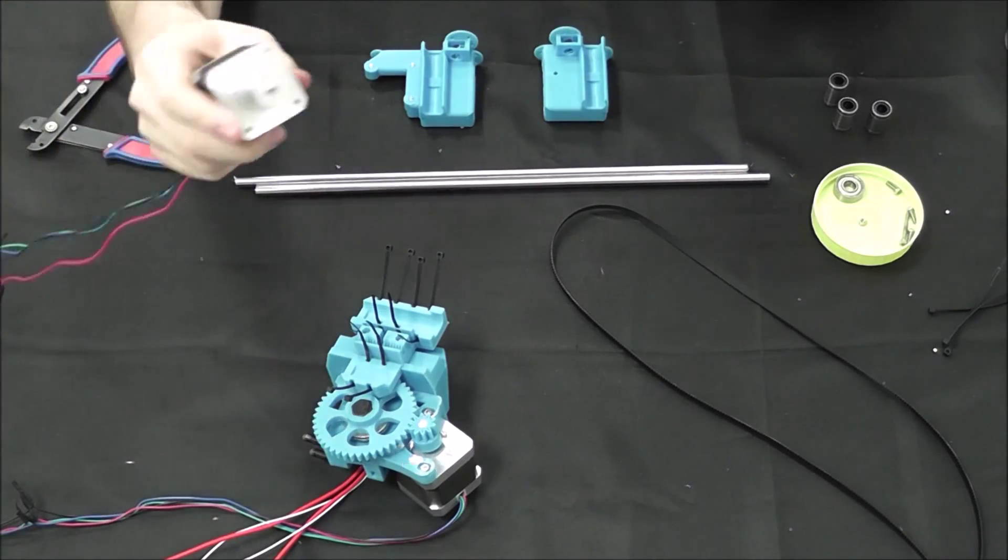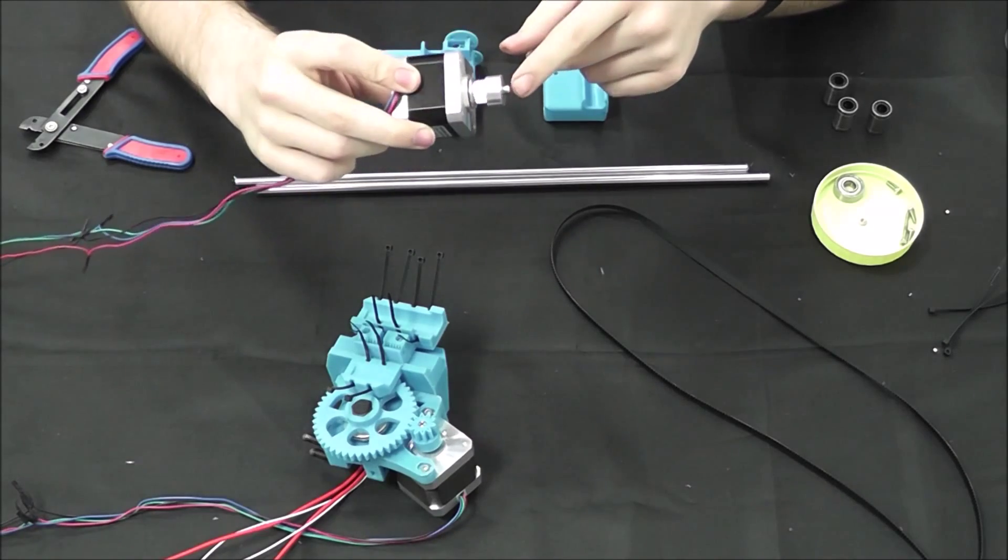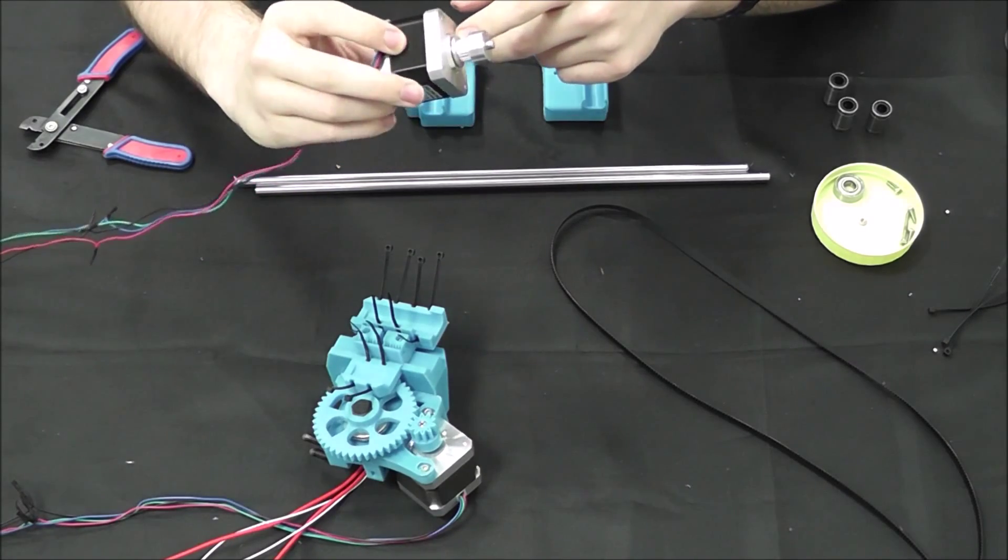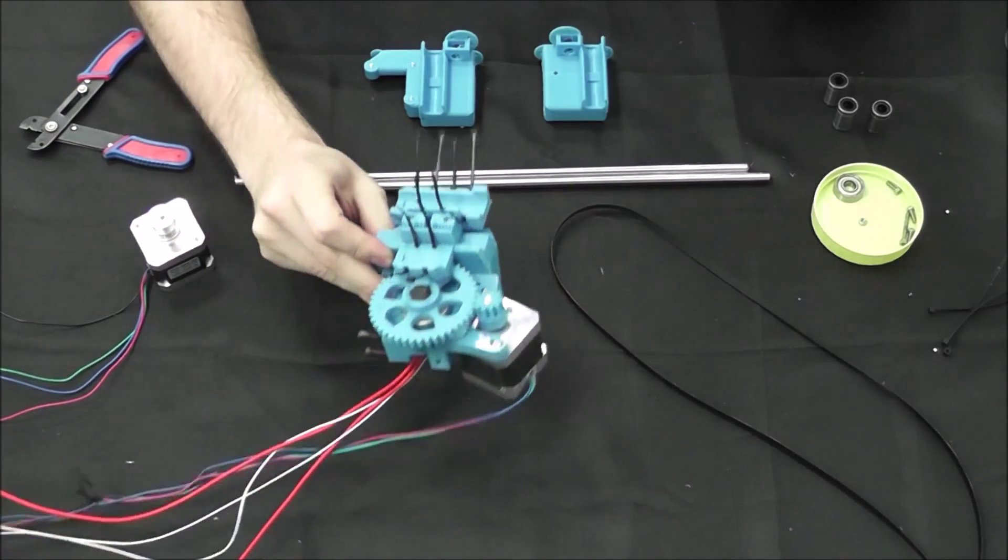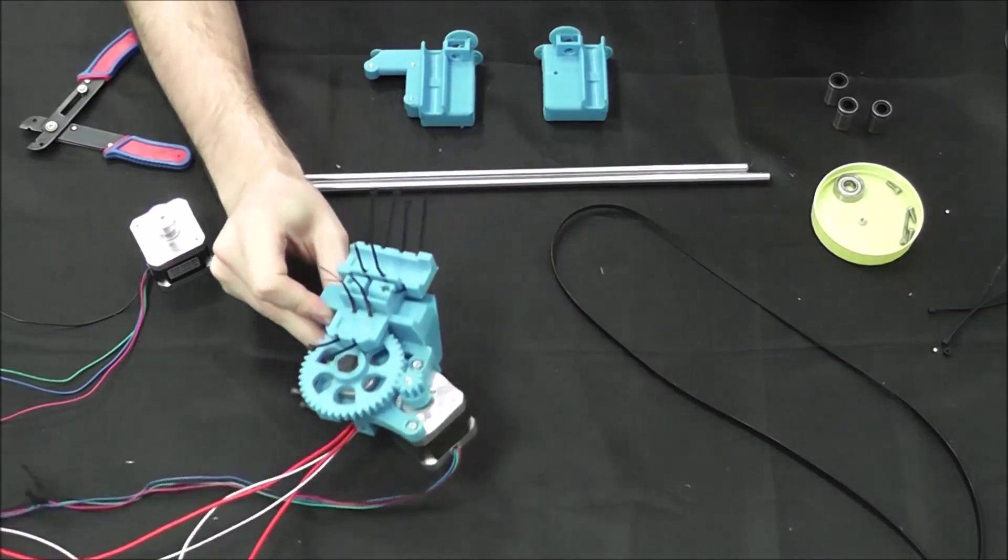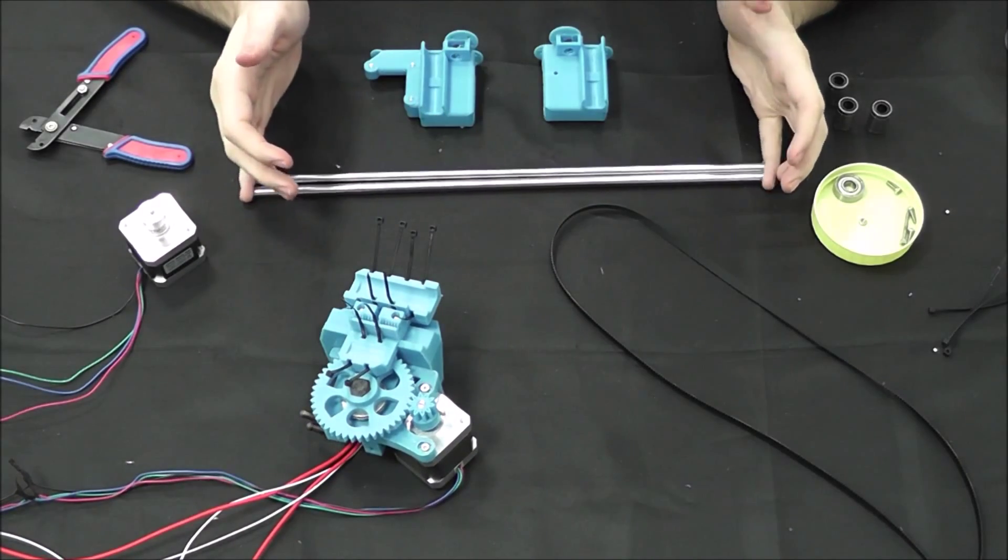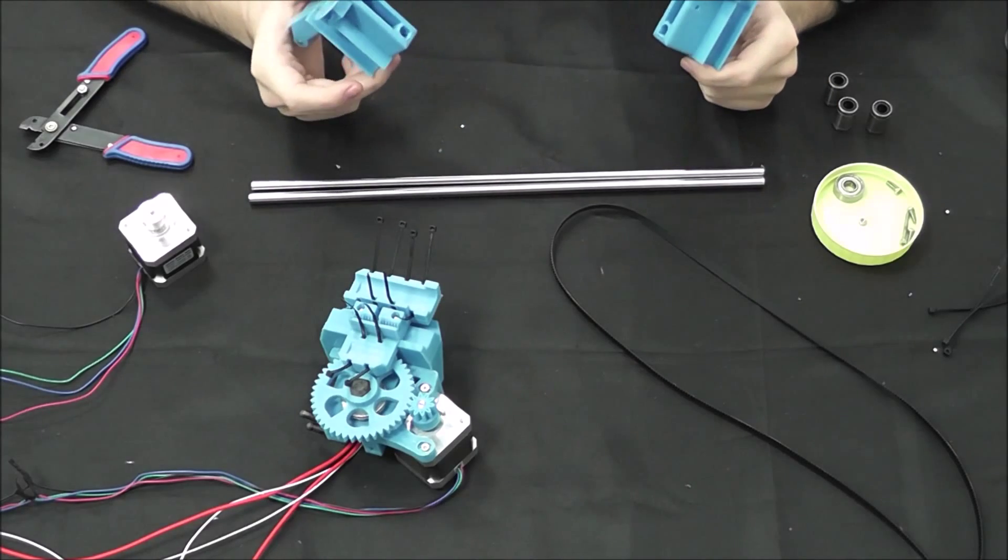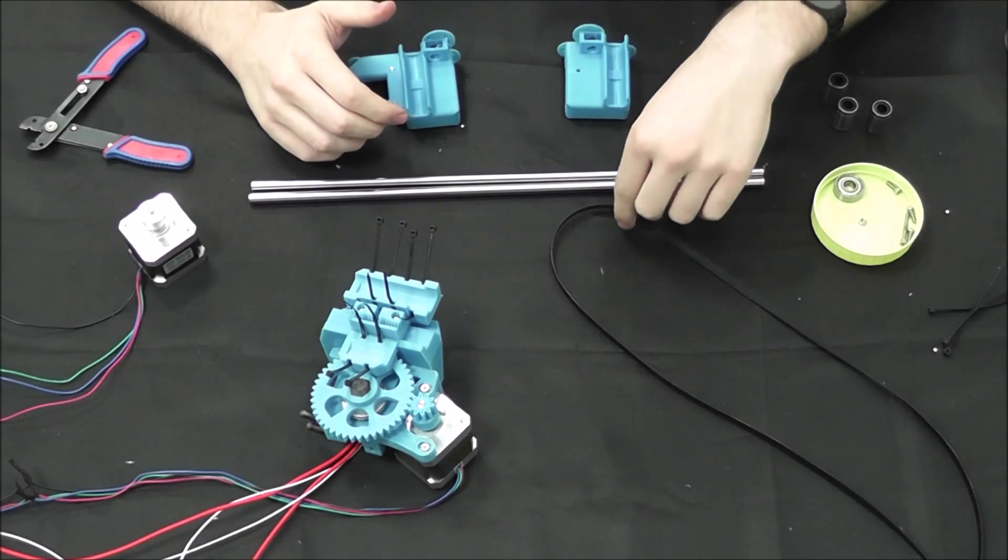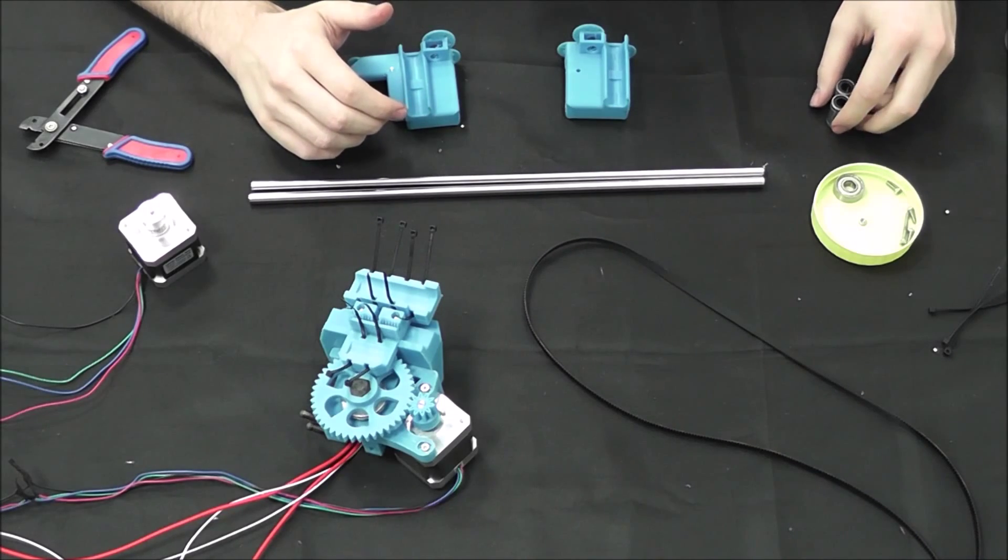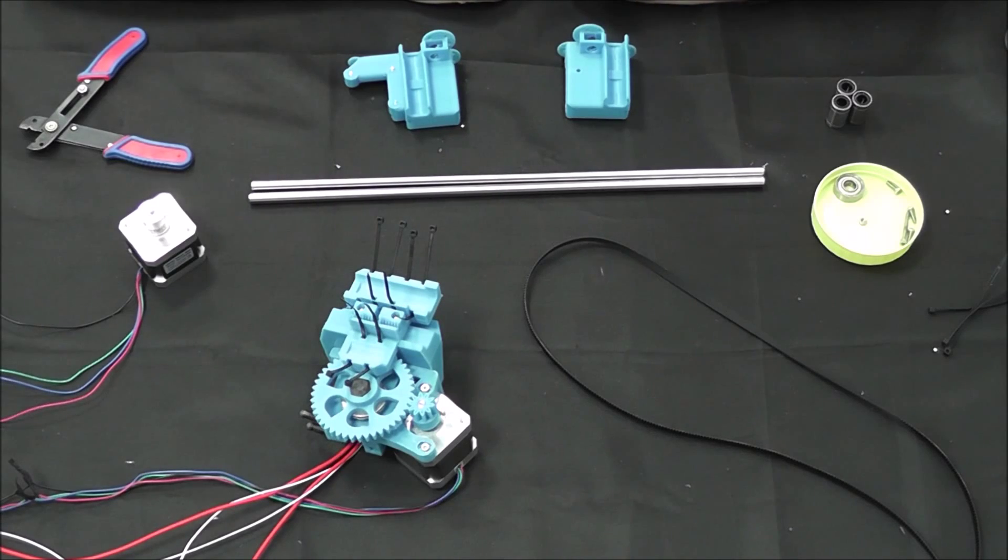For this we're going to need a NEMA 17 stepper motor with a GT2 timing pulley with the teeth against the motor body, our assembled extruder with the x-carriage already attached, two 370 millimeter smooth rods, our x-axis plastic parts including the motor mount and the idler, a timing belt, three LM8UU linear bearings and the 608 ZZ roller bearing.